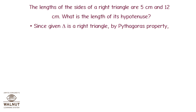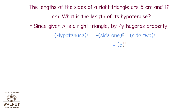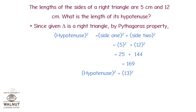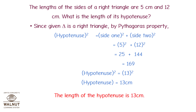The lengths of the sides of a right triangle are 5 cm and 12 cm. What is the length of its hypotenuse? Since it is given that the triangle is a right triangle, by Pythagoras' property, hypotenuse squared equals side 1 squared plus side 2 squared, which equals 5 squared plus 12 squared, which equals 25 plus 144, which equals 169. Therefore, hypotenuse squared equals 13 squared. Therefore, hypotenuse equals 13 cm.